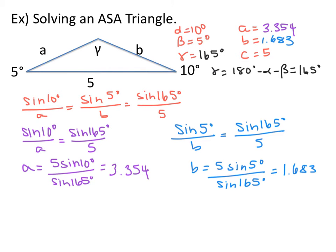Setting up the Law of Sines: sine of 10 degrees over A equals sine of 5 degrees over B equals sine of 165 degrees over 5. Using sine of 10 degrees over A equals sine of 165 degrees over 5, we solve for A and get 3.354. Similarly, sine of 5 degrees over B equals sine of 165 degrees over 5, so B equals 1.683. Always go back to your Law of Sines ratio and use the given information.